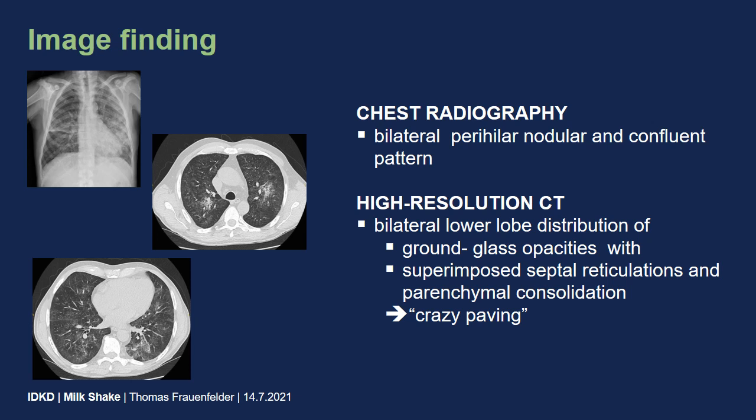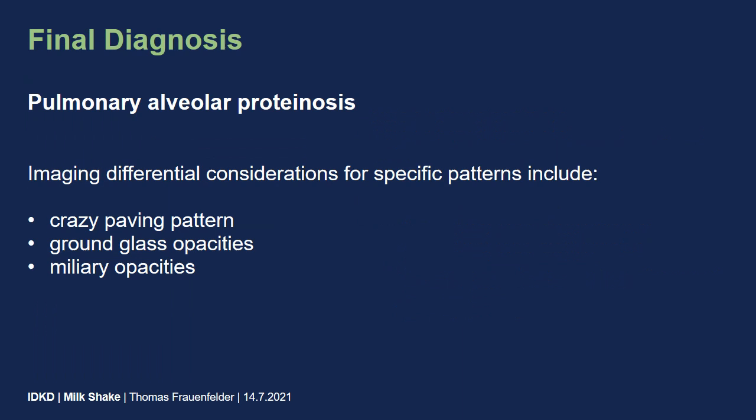So what is the final diagnosis? We are dealing here with pulmonary alveolar proteinosis. Image differential considerations for this specific pattern include crazy paving pattern, ground glass opacities, and miliary opacities.